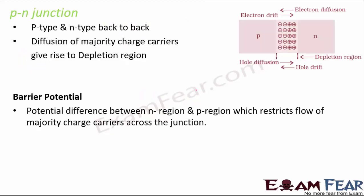Now let's talk about the P-N junction. When a P-type and N-type semiconductor are placed back to back, they form a P-N junction. The P-type conductor has a majority of holes and the N-type has a majority of electrons. These majority charge carriers diffuse across the junction — holes move toward the N side and electrons move toward the P side — because of the concentration gradient.